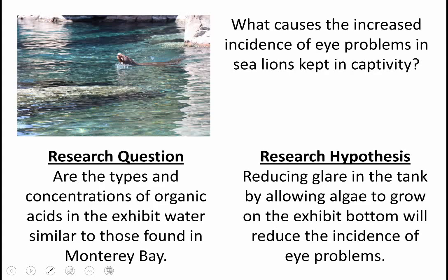We could also study it from an angle where we have a prediction. We might hypothesize that glare contributes to the eye problems, and that reducing glare in the tank by allowing algae to accumulate on the bottom would reduce the incidence of eye problems. In this case we have an explanation, we have a prediction about what's occurring, and we label that as a research hypothesis.